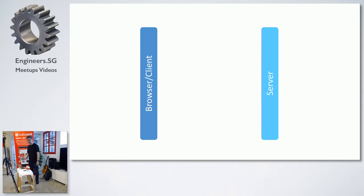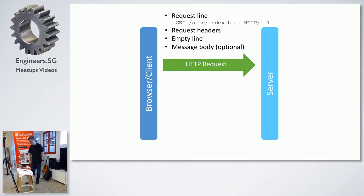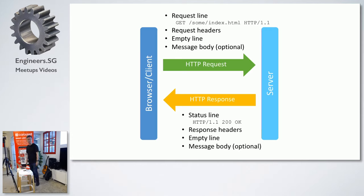Essentially, a web application has a client and a server. The client sends an HTTP request to the server. The server receives certain information: the request line, request status, followed by an empty line, and then the optional message body. The server returns a status line — OK, Not Found, whatever — then a set of response headers, an empty line, and finally a message body. The request and response are very similar, and that's deliberate. This is basically HTTP.